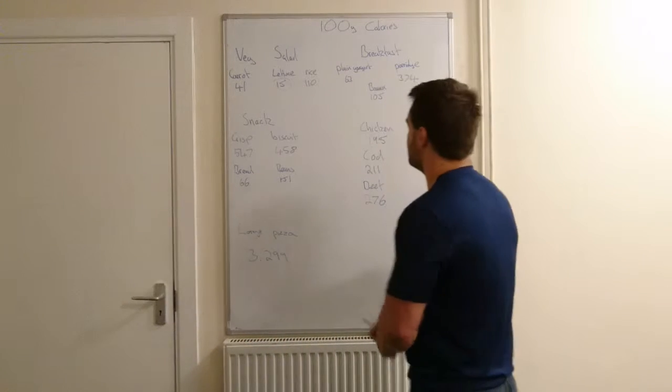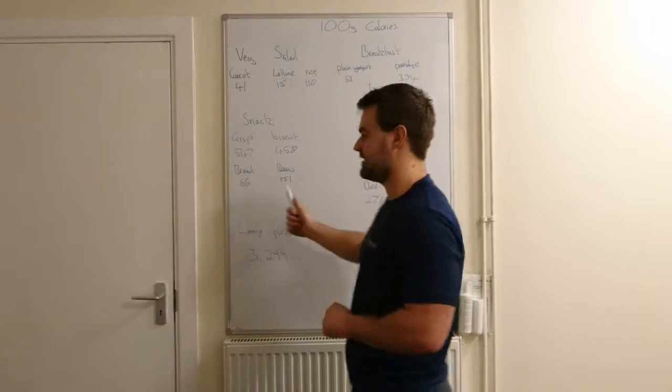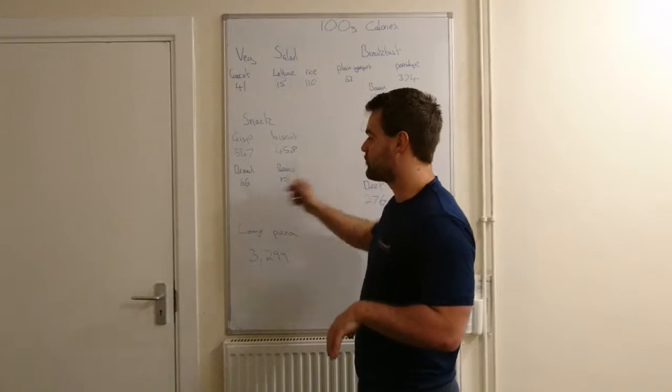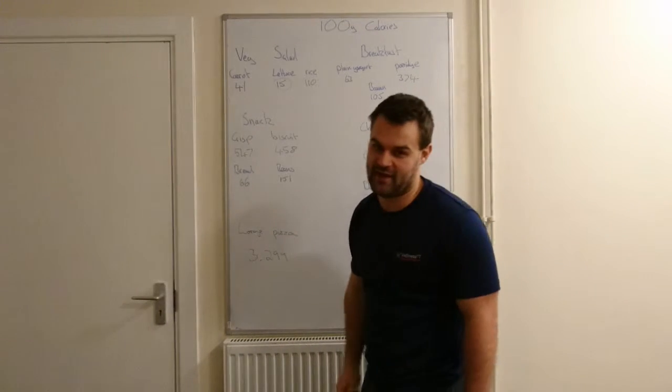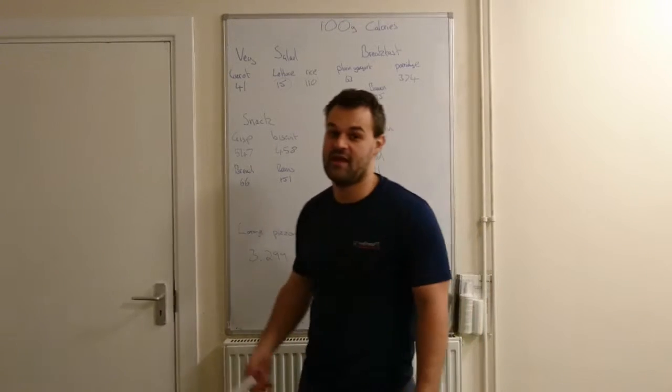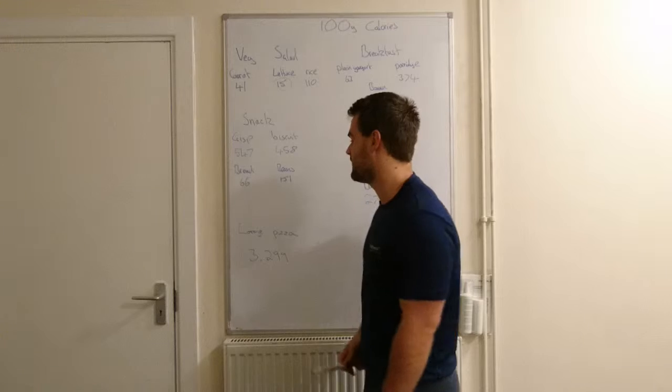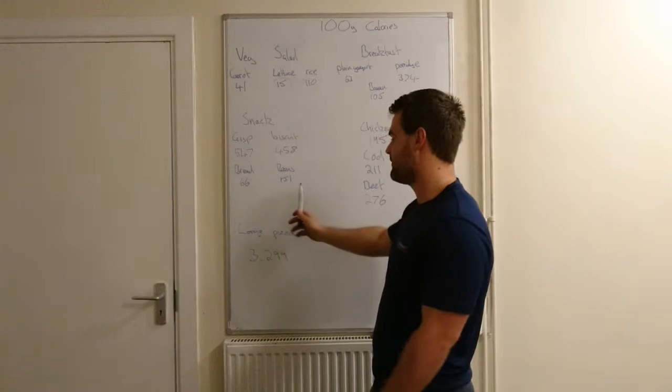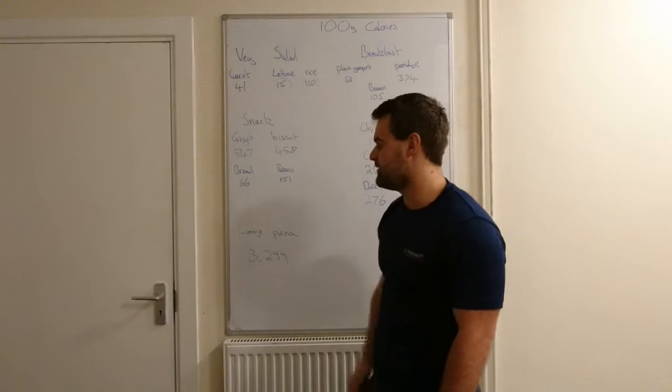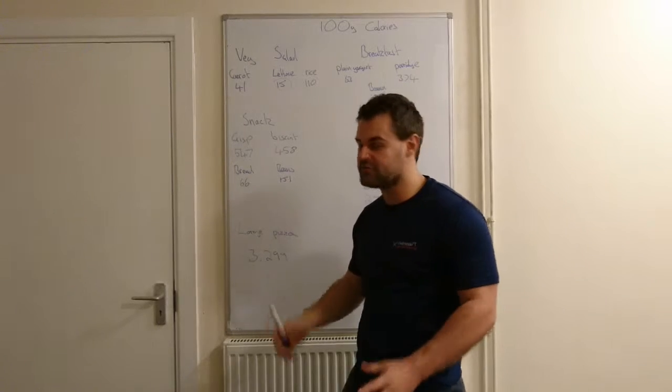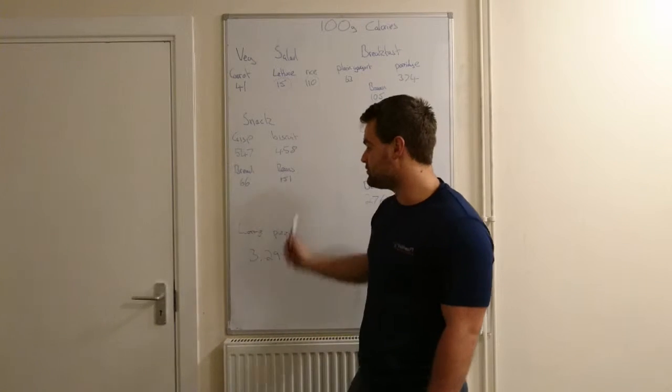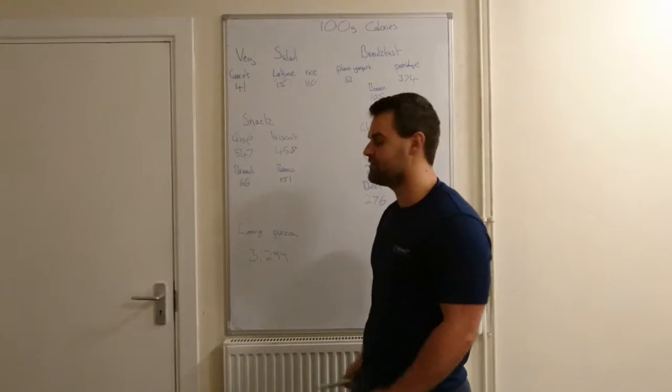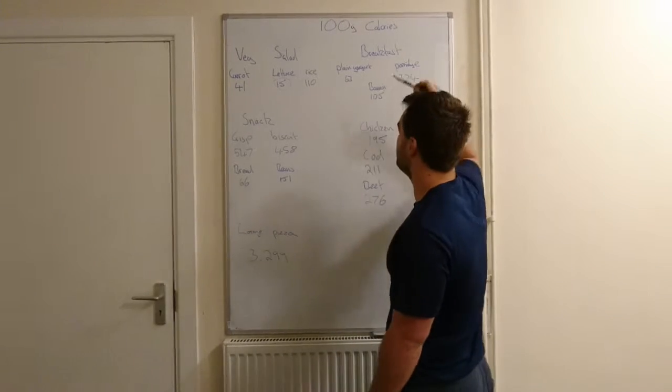Second thing, fairly easy to do: snacks. Again, this is per 100 grams. Crisps: 100 grams of crisps is 550 calories. 100 grams of biscuits is 500. That is not good. Very easy, you can swap that for just beans on toast. 100 grams of beans, 151 calories. Bread, one slice, 60 calories. Little changes like this, you can then eat two of these potentially for less calories than packing out on a bunch of biscuits. Just little tweaks.